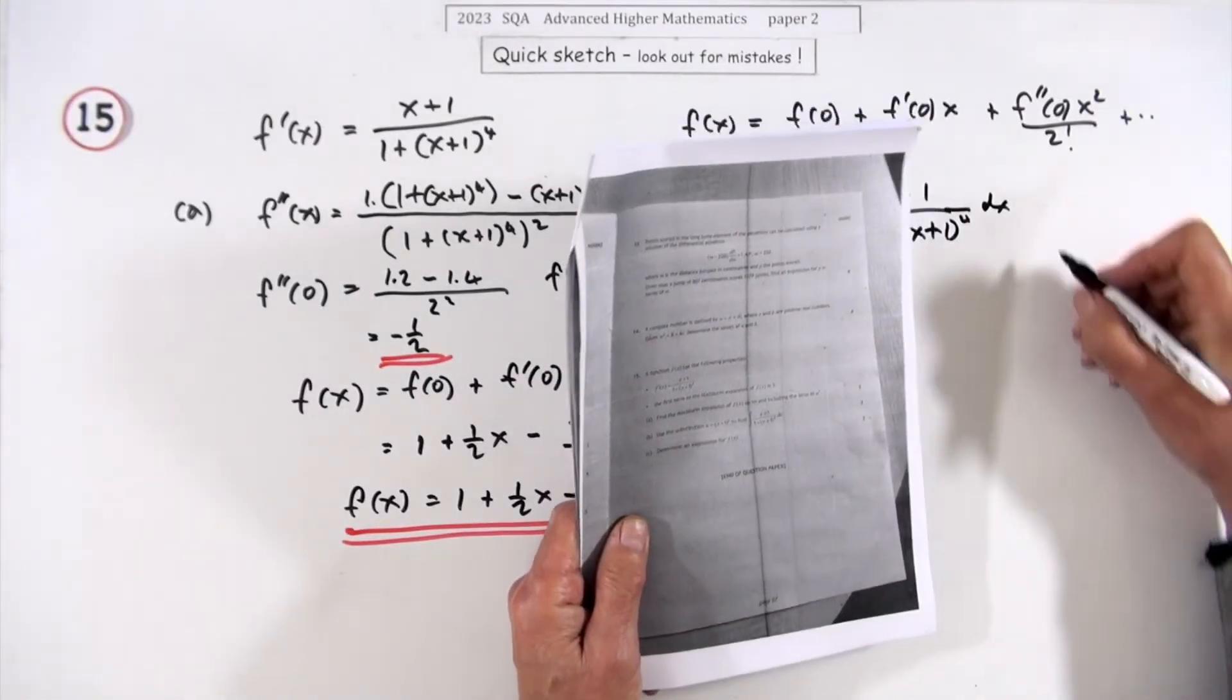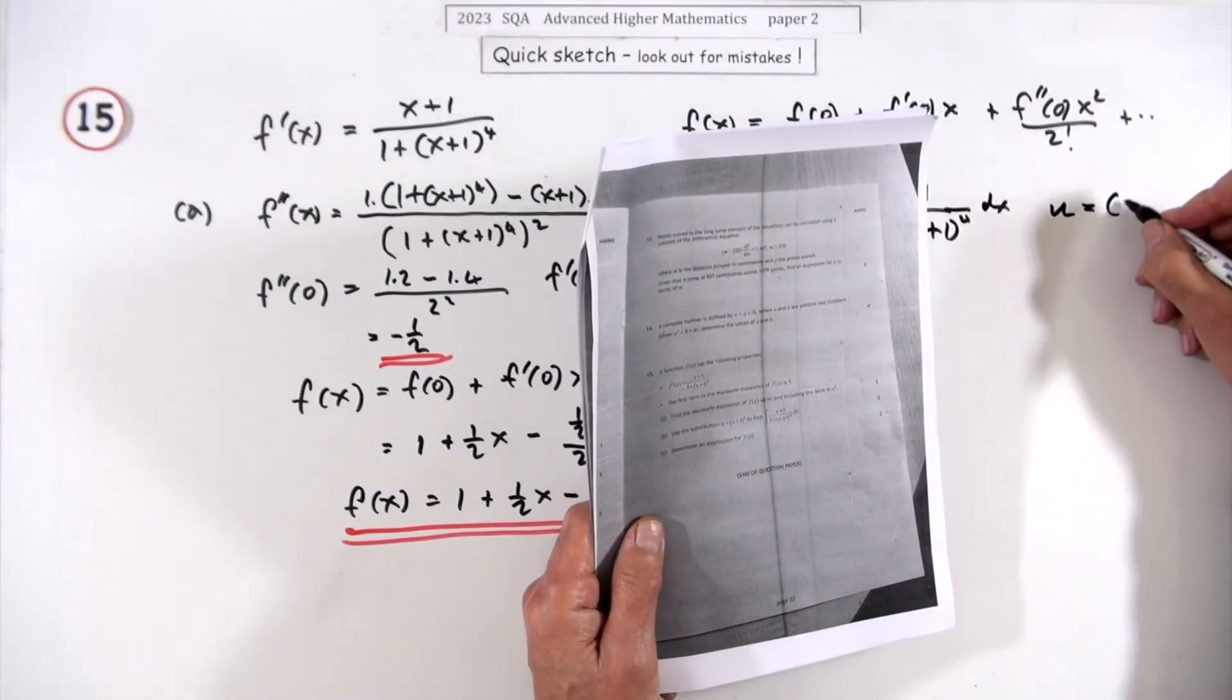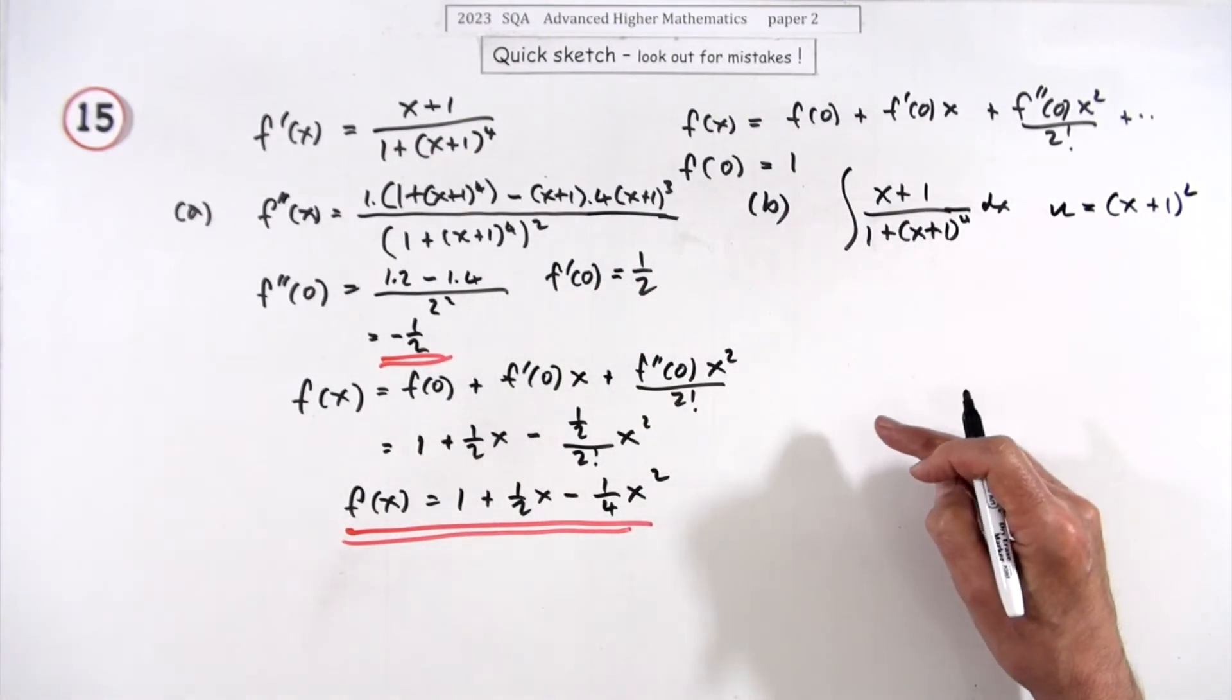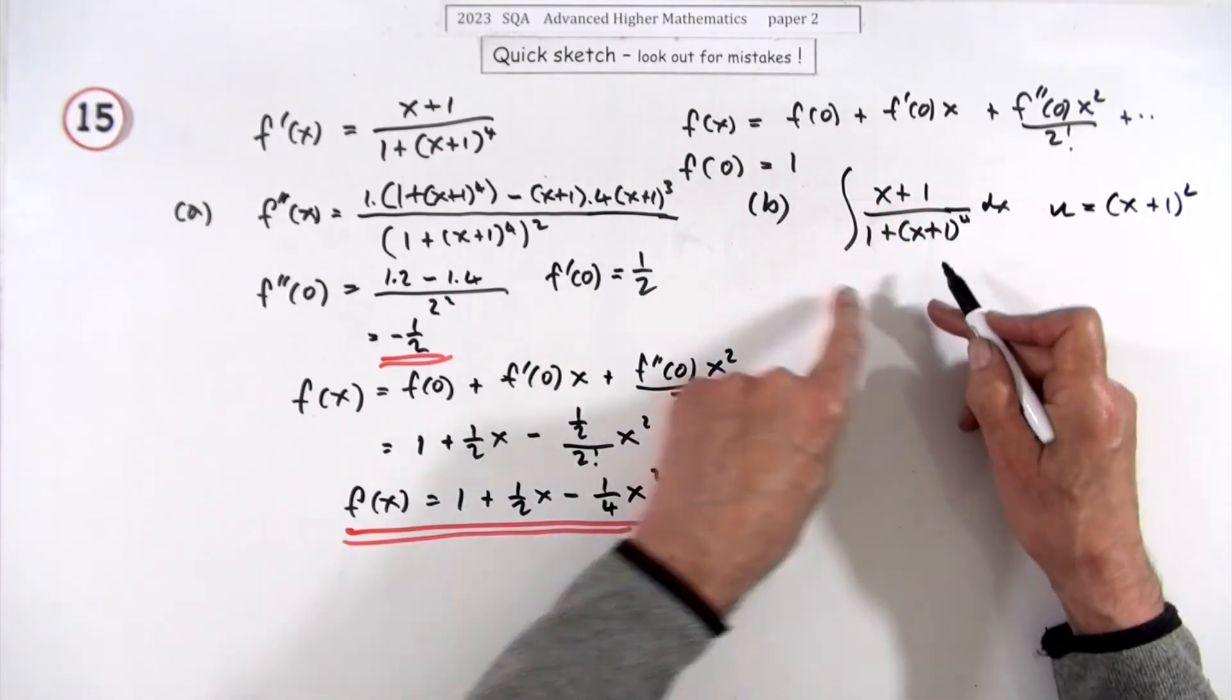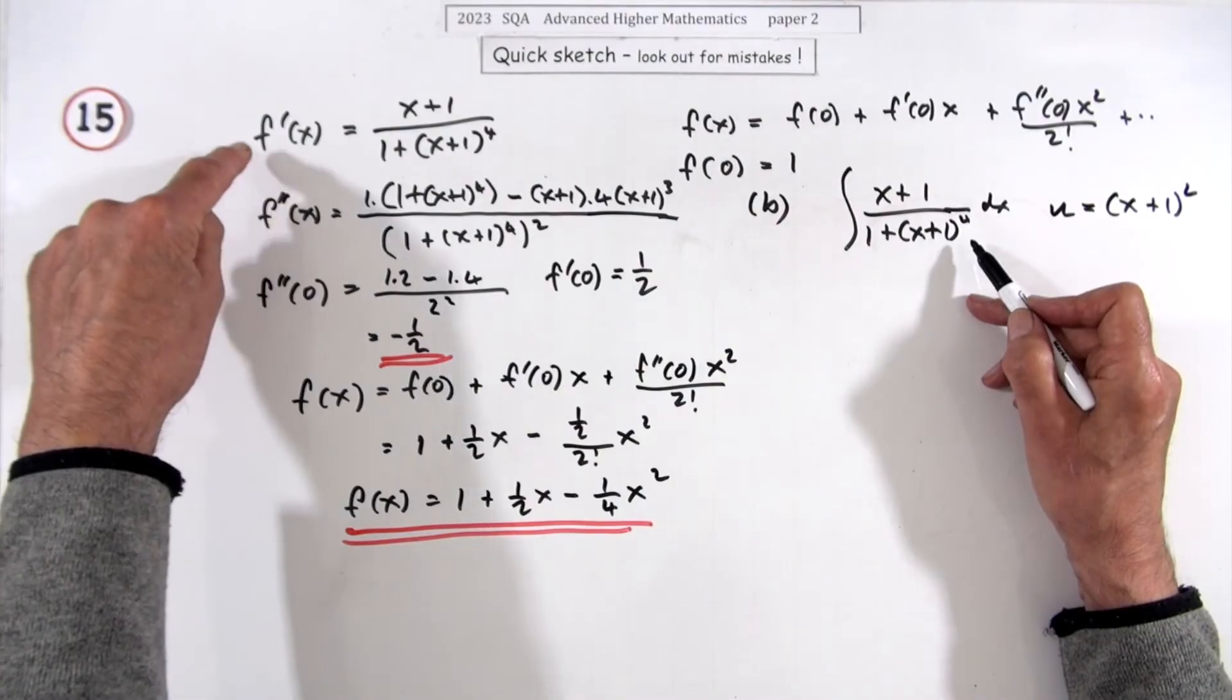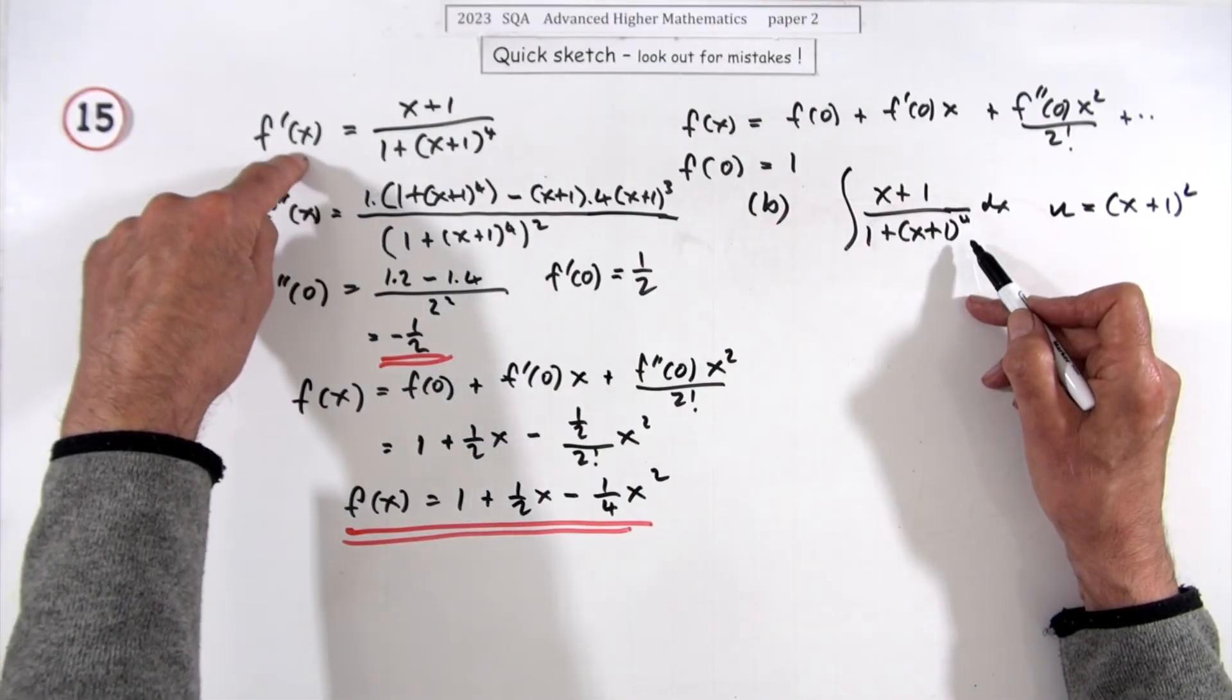Now in part (b) it says use the substitution u = (x+1)² to find this. Now I've just shifted that over there so I could use this space, which is of course exactly f'. So this is exactly what you would do if you wanted to rediscover the function f(x), and there's an initial condition as well.